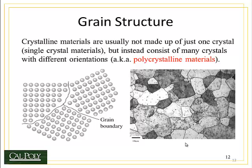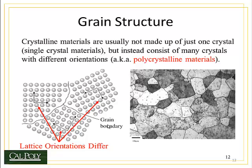But most materials — in fact almost all materials — are formed as polycrystalline materials, meaning they have more than one crystal. What happens when two crystals run into each other? Let's say we have a crystal over here on the right and another over here on the left, each with the simple cubic unit cell. Notice that the crystal on the right has a different orientation than the crystal on the left. Where they intersect, we have a region of disorder. This area of disorder where the atoms don't line up is called the grain boundary.